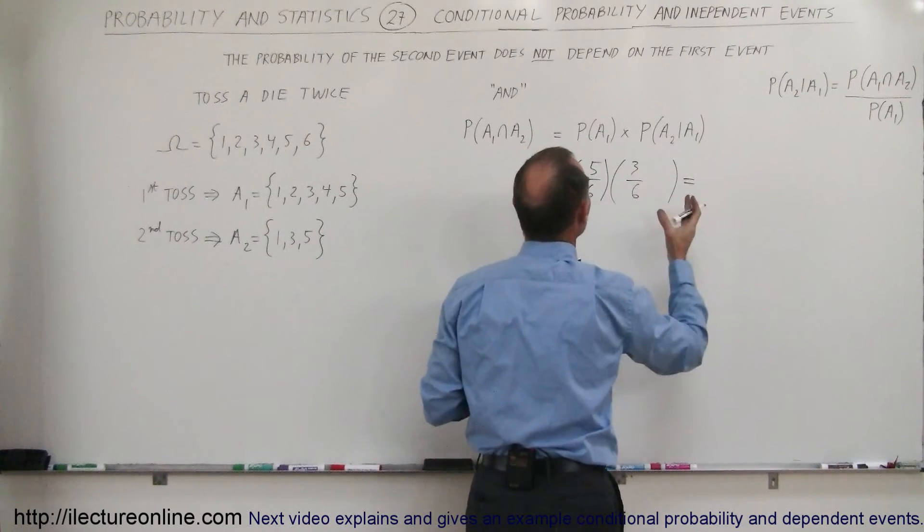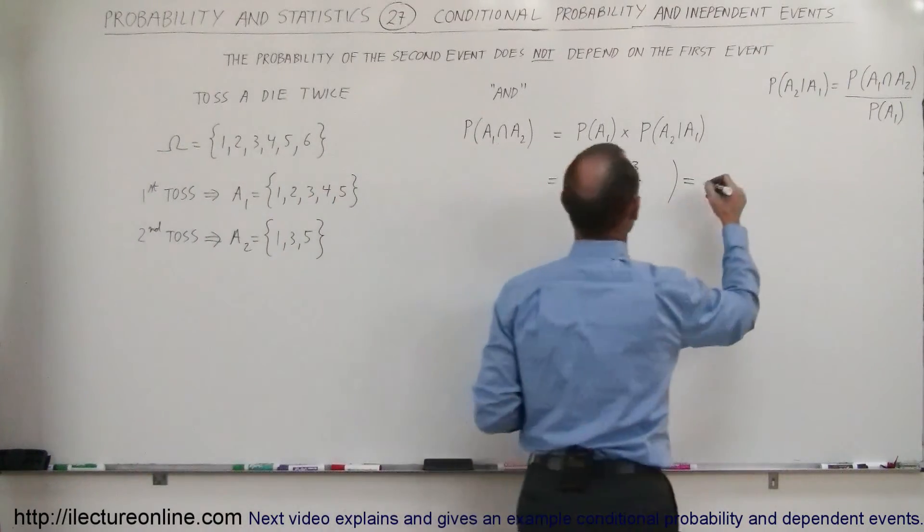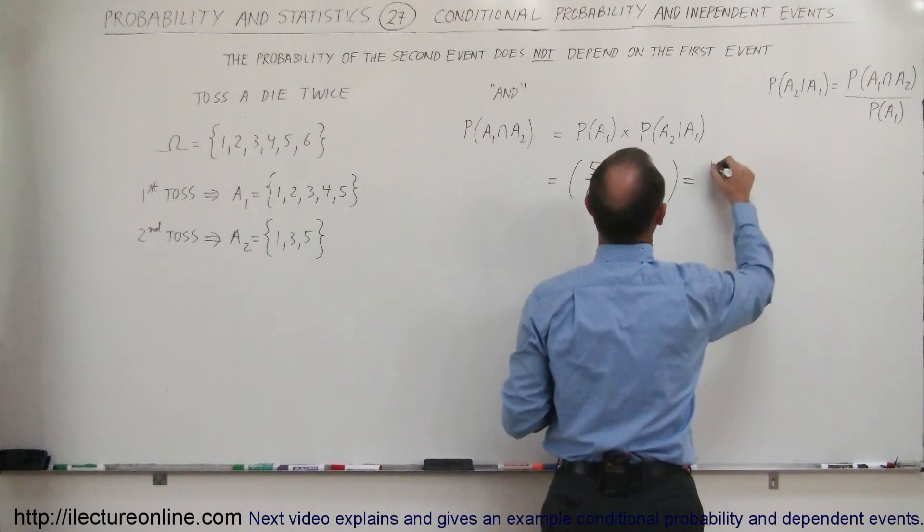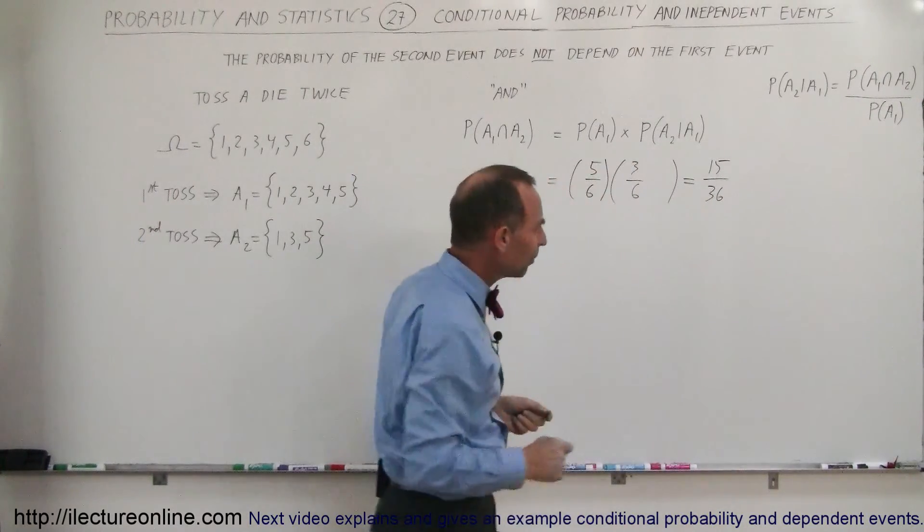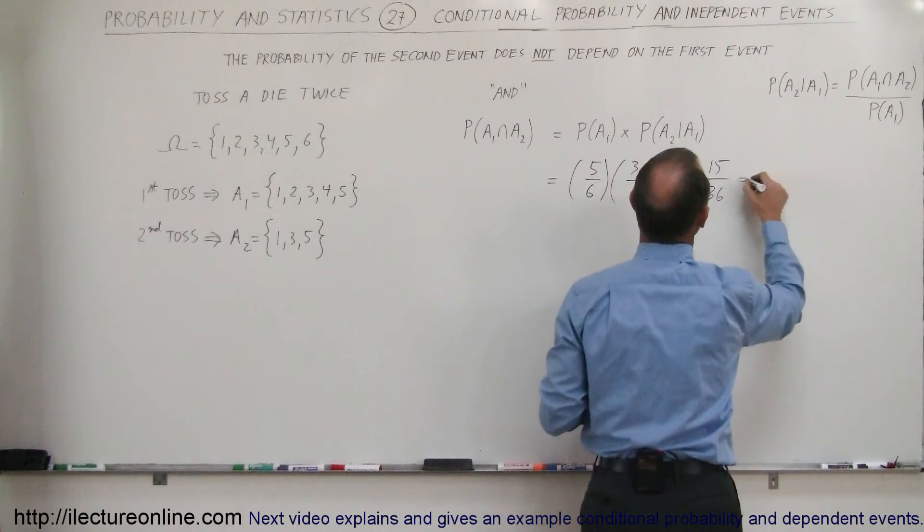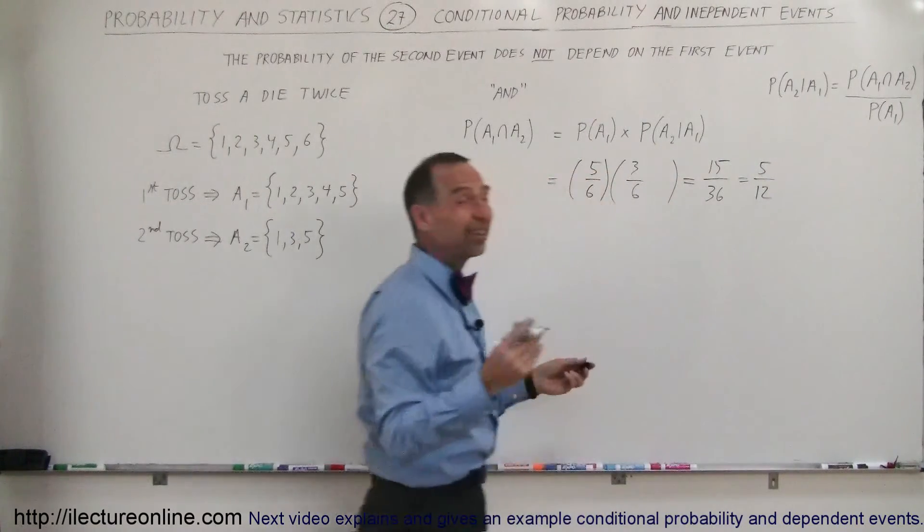And so therefore, the probability of the first event occurring and the second event occurring is simply the product of the two probabilities, which is 15 divided by 36. And I think we can simplify that, because 15 divided by 3 is 5, and 36 divided by 3 is 12. So that's the probability.